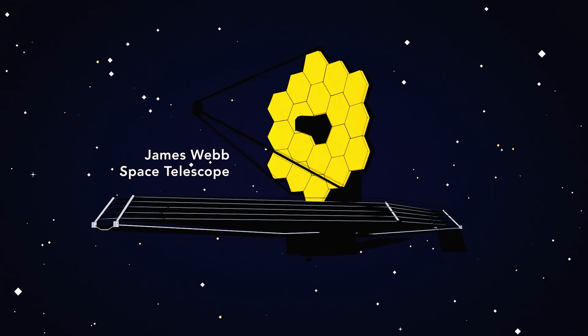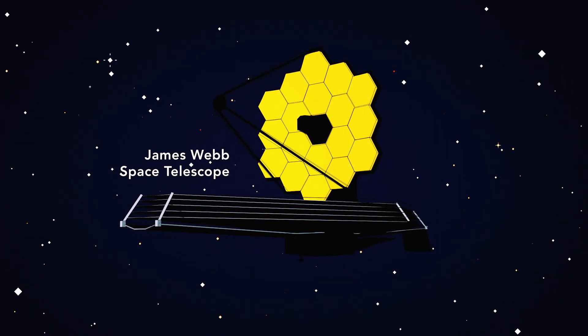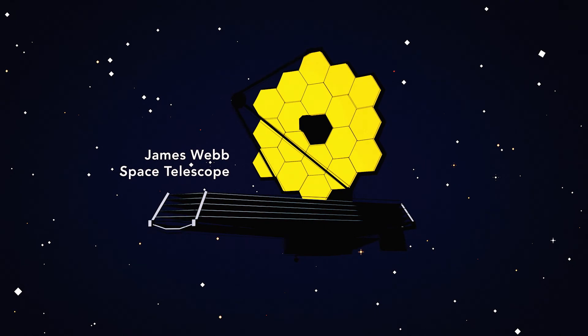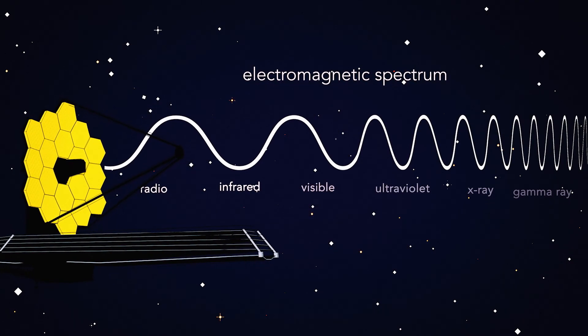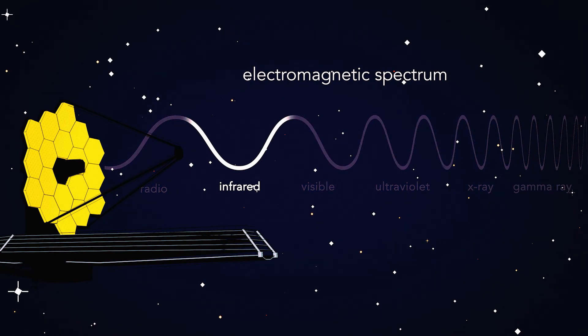The James Webb Space Telescope is going to revolutionize the way that we can view exoplanet atmospheres. It is an infrared telescope that's looking at the colors just beyond what our eyes can see in the red.